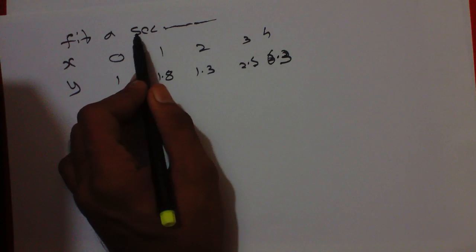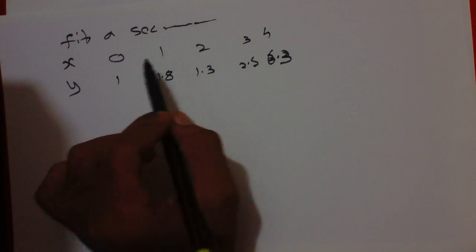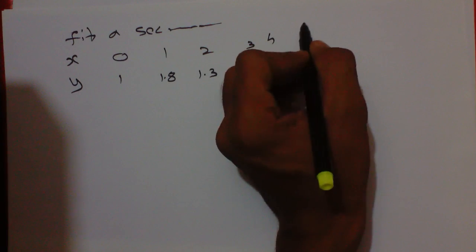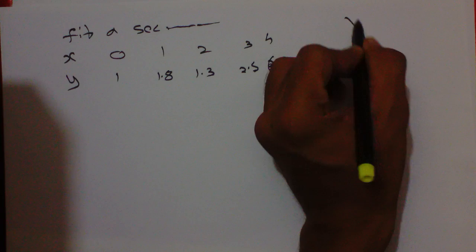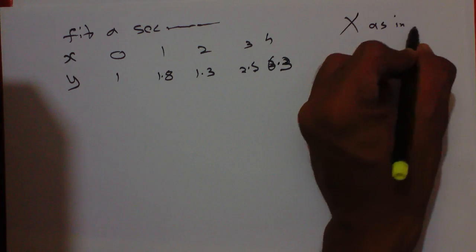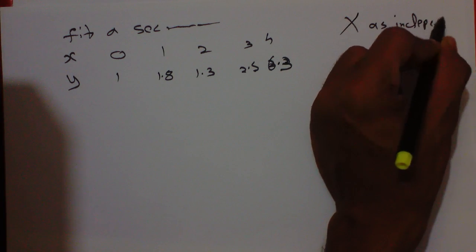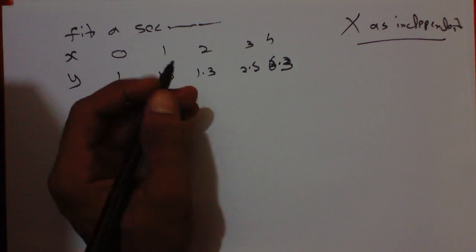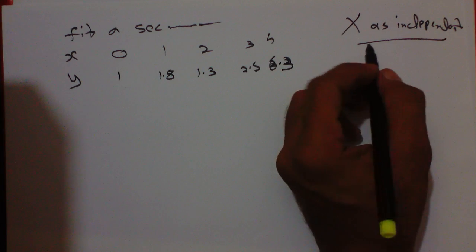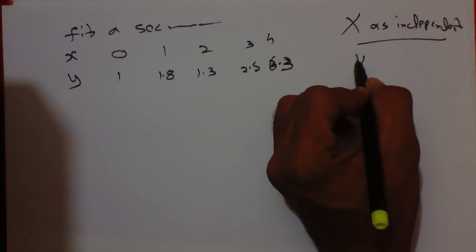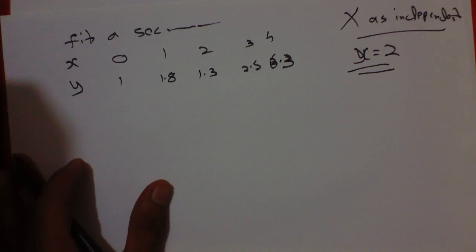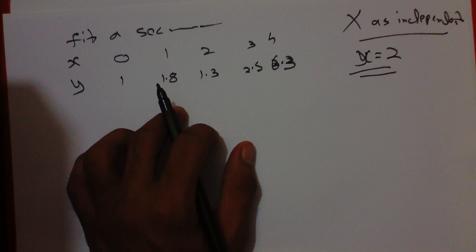Fit a second degree parabola to the following data, taking x as the independent variable. And find the difference between actual value and estimated value of y when x is 2. I will explain that later. Let's solve this with a normal equation for a second degree parabola.